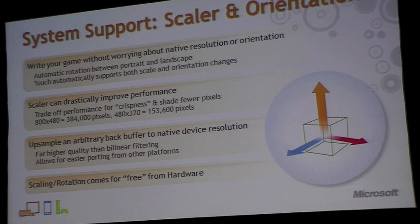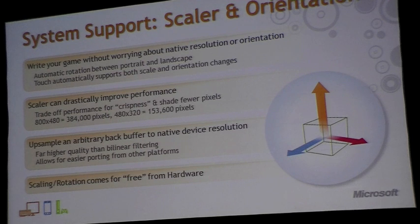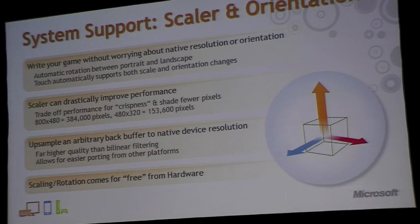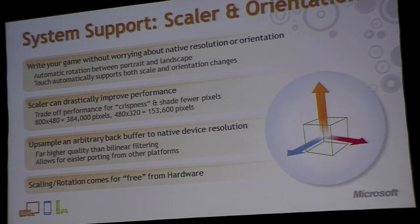One of the great advantages we're providing on Windows Phone 7 Series with graphics is system support for a scaler and orientation. Similar to the Xbox 360's ability to render at a lower resolution and then scale up through hardware to the native resolution, we're providing similar functionality on Windows Phone 7 Series. This allows you to write your game without worrying about the native resolution of the device — we'll do automatic translation between portrait and landscape, and automatically translate touch inputs as well.